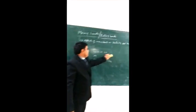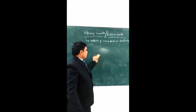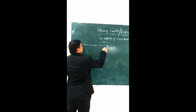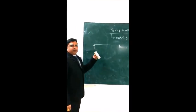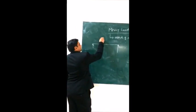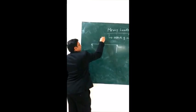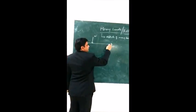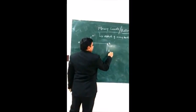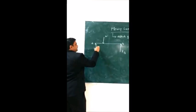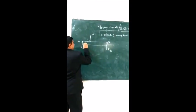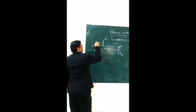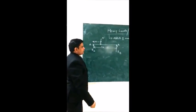First, we consider a statically determinate beam carrying a single concentrated load W. This load is moving from left to right. The left support is A and the right support is B. The reaction at A is R_A and at B is R_B. The total span is L meters, and the load is at a distance 'a' meters from the left support.